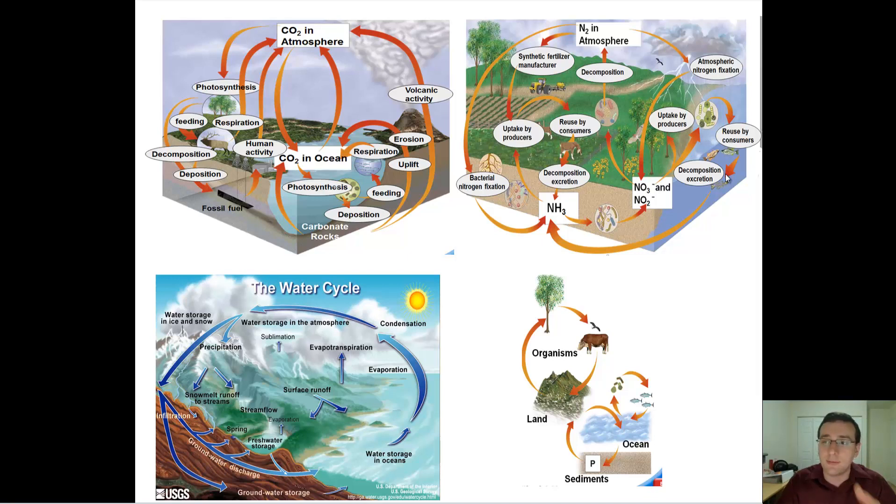Meanwhile, the phosphorus cycle that does not involve the air will be very slow, which is why phosphorus is a very strong limiting factor in ecosystems, because it takes a very long time for that to cycle.